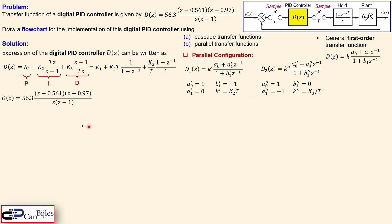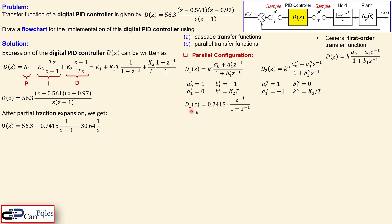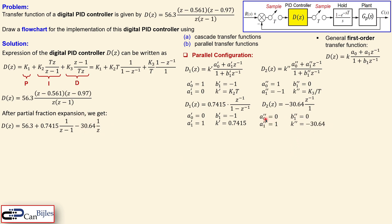Moving on to the actual transfer function: after partial fraction expansion — discussed in detail in example five — we obtain this expression. Comparing it to the general first-order transfer function, we can identify that d1 has k equal to 0.7415, and it matches the form k times z⁻¹ over (1 minus z⁻¹). Similarly for d2 we can identify k-double-prime and a0-double-prime. We also divide by z to recognize the parameter values clearly.